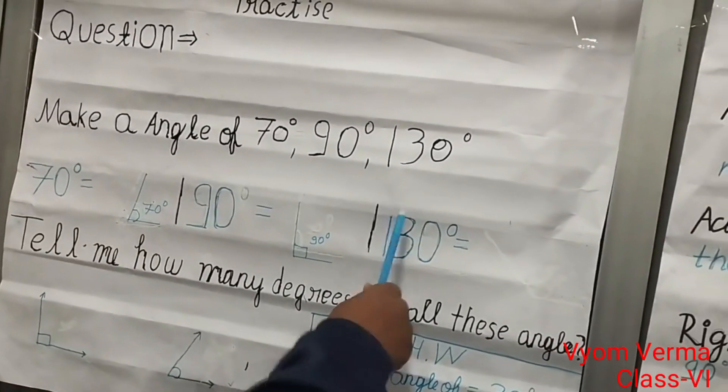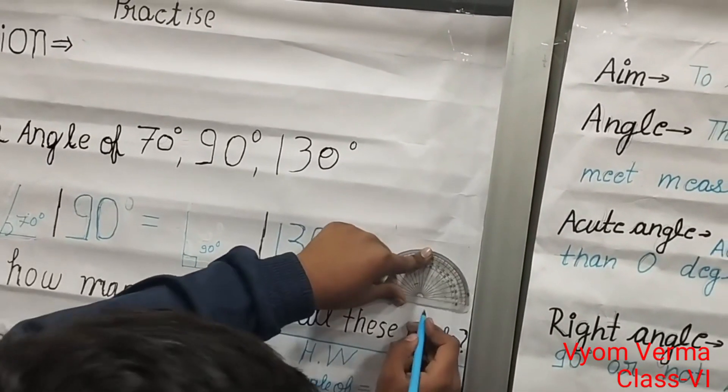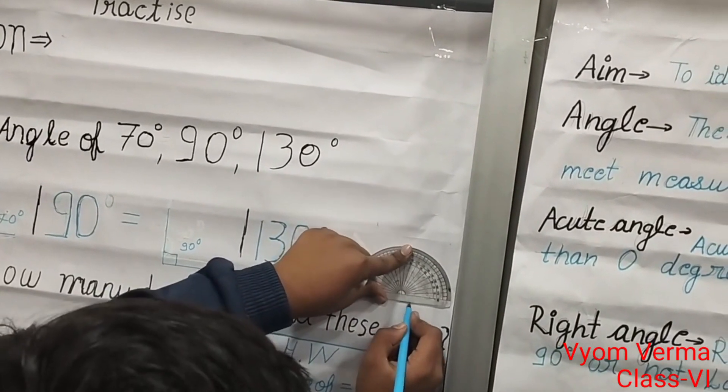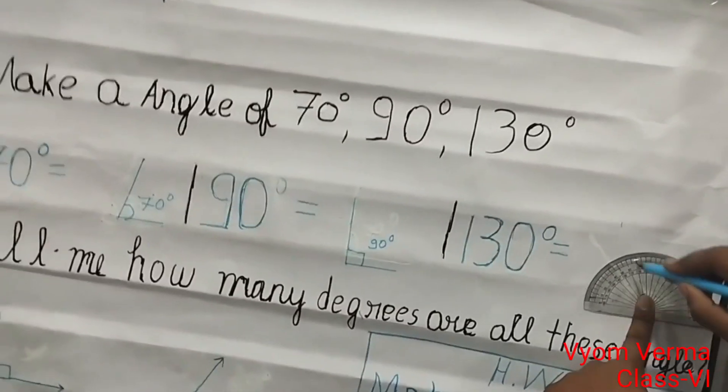130 degrees. It is an obtuse angle. Draw a straight line and make a dot on 130 degrees.